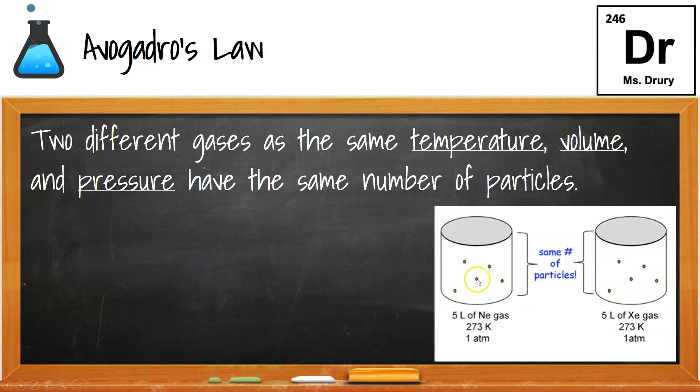They both have five particles, because the particles in themselves are itty-bitty tiny, the same itty-bitty tiny, and since the temperature, pressure, and volume are the same, the space between them must be the same.